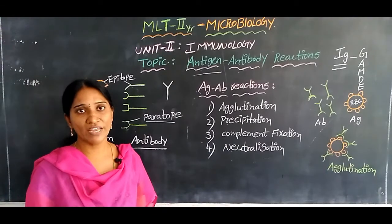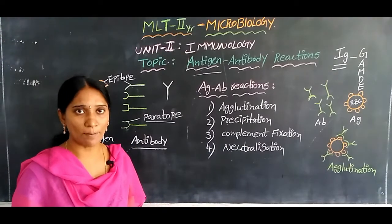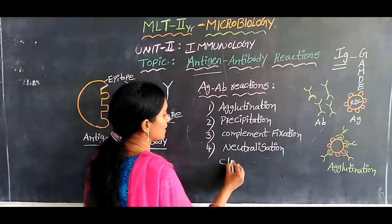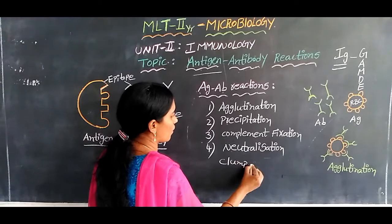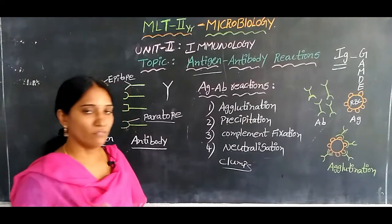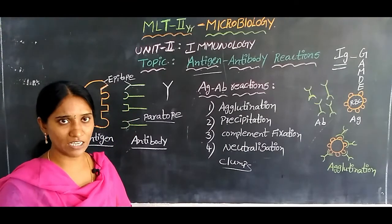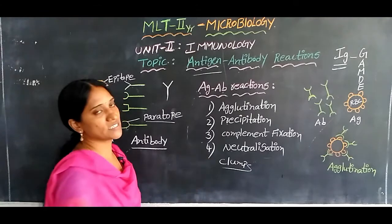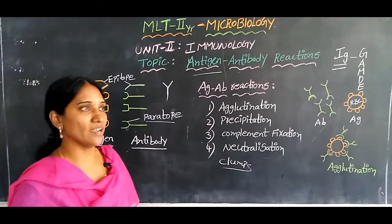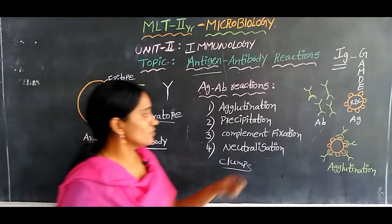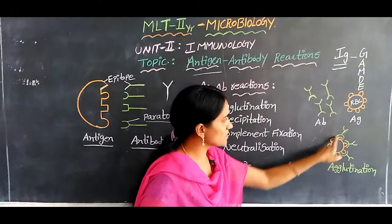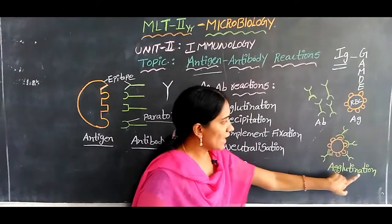Agglutination means when antigen and antibody combine, they form clumps or agglutinates. When antigen combines with antibody, they form clumps — that reaction is known as agglutination.